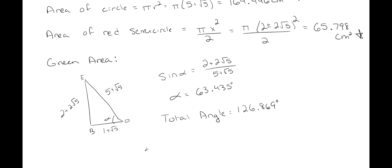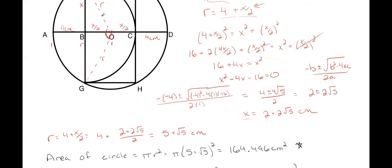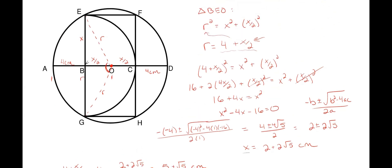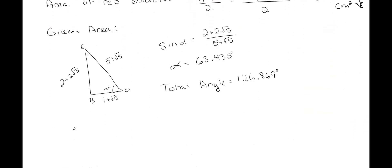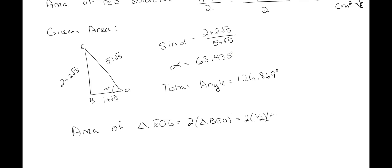For the triangle area — there are two right triangles, so we use base times height: X times X/2. The area of the large triangle EOG equals 2 × (1/2 × (1 + √5) × (2 + 2√5)), which comes out to approximately 20.944 cm².